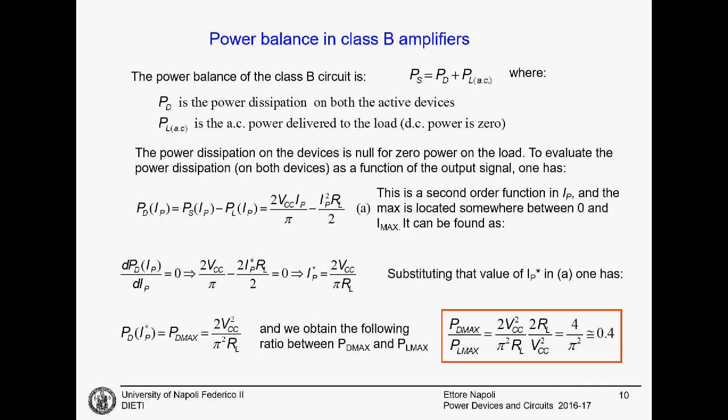We can repeat our discussion about the power balance for these Class B amplifiers. And again, write that the power taken from the power supply is equal to the power dissipated on the device plus the power that you dissipated on the load. This is the AC power. The DC power is zero. Here we have that the power dissipation on the devices is zero if we have zero power on the load. This means that we need to calculate the power dissipation on both devices as a function of the output signal. And we get that the power dissipated on the device is equal to the power from the supply minus the power on the load.